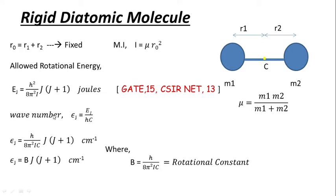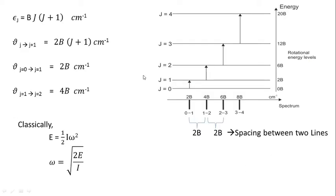In spectroscopy, all quantities are mainly expressed in wave number. So εⱼ = h/(8π²IC) · J(J+1) cm⁻¹, which can also be written as εⱼ = B·J(J+1) cm⁻¹, where B = h/(8π²IC) is called the rotational constant. The energy εⱼ = B·J(J+1), and the distance between two consecutive levels is 2B·(J+1) cm⁻¹.